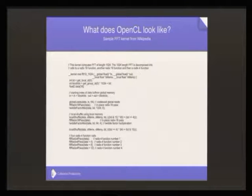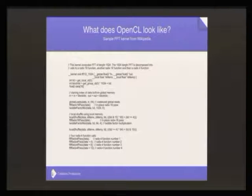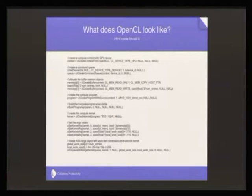This is some sample OpenCL code from Wikipedia to calculate a Fourier transform. It looks quite much like C code — it has comments and is clearly written by hand. And then the host code to call it looks like this.